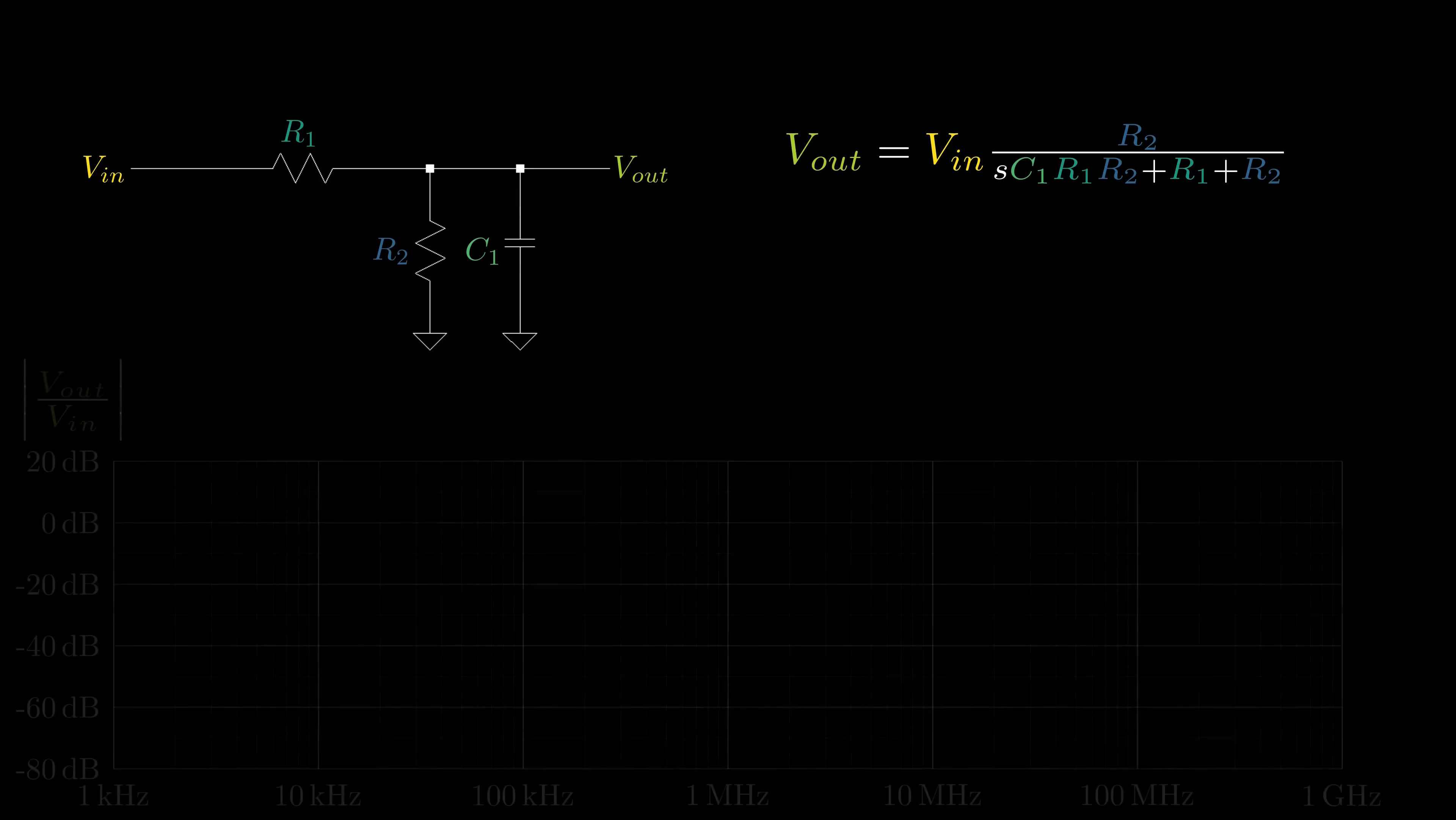Now, let's introduce one of the capacitors into the standard resistive divider. We can use our voltage divider equation a third time, where Z1 is R1, and Z2 is the parallel combination of R2 and C1. Simplifying Z2 gives R2 over SC1 R2 plus 1. After plugging in Z1 and Z2 to the voltage divider equation and then simplifying, we get that Vout equals Vin times R2 over SC1 R1 R2 plus R1 plus R2.